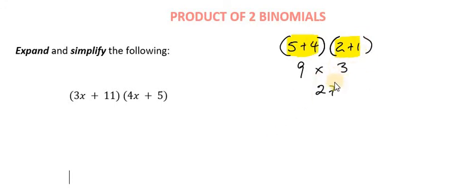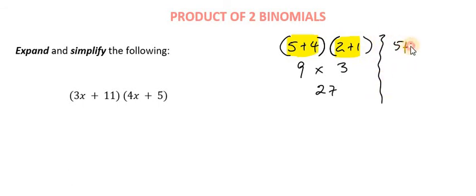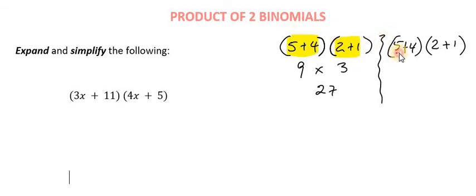Now, this method is quite easy to understand because you always work out the parentheses or brackets first. But is there another method we could use? There will come a time when we might want to use a different method. The other method is taking the 5 and multiplying it by the terms in the second bracket, then taking the 4 and multiplying it by those terms as well. So let's do that now.